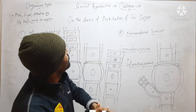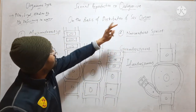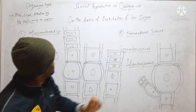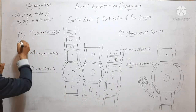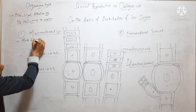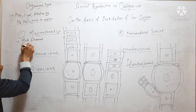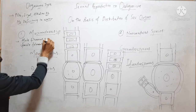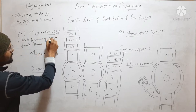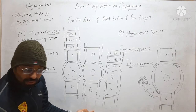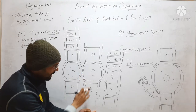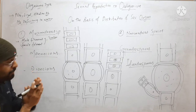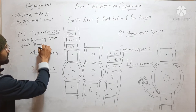On the basis of distribution of sex organs, Oedogonium is divided into two different types of species: Macroandrous species and Nannandrous species. In Macroandrous species, the male filament and female filament are morphologically similar, but they differ physiologically. The female filament has oogonia and the male filament has antheridia.